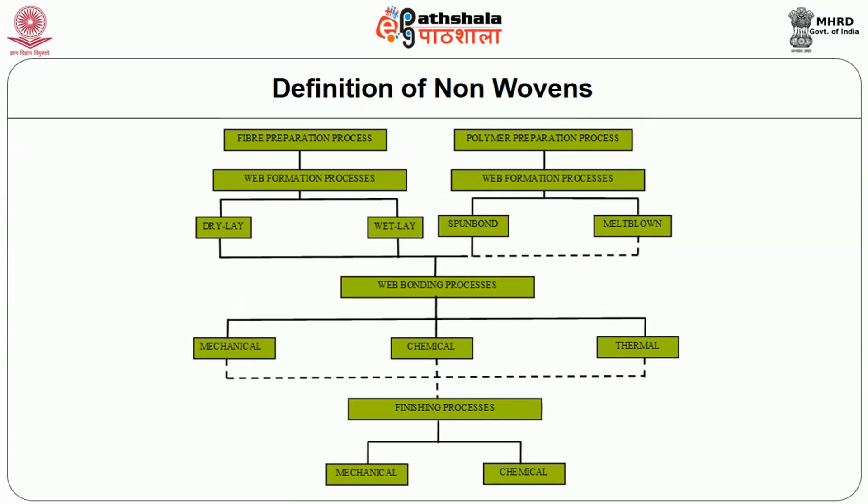Here you can see in the schematics the flow of the fiber preparation process for the short fibers, the polymer preparation process for the continuous filaments, then how the prepared fiber goes into the formation of the web. It could be either dry-laid or wet-laid. Then the wet-laid or dry-laid material has to be bonded together using the web bonding process. The web bonding process could be either by mechanical, chemical or the thermal process. Post the web bonding process, the nonwovens textile has to go for the finishing process.